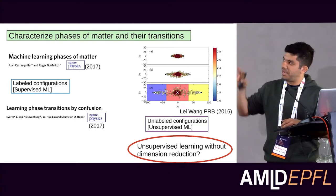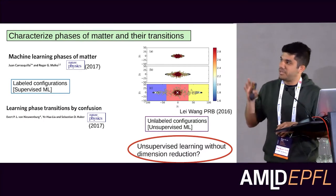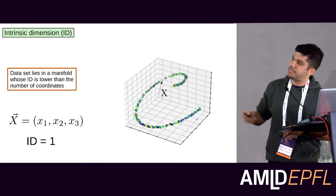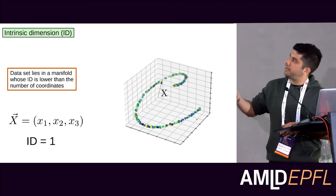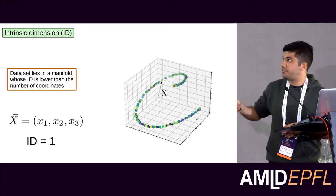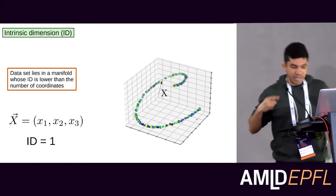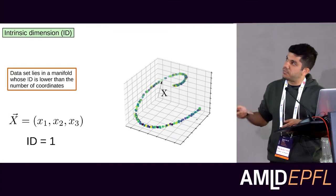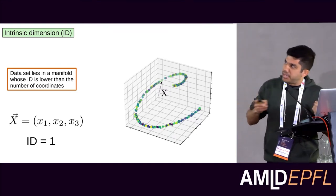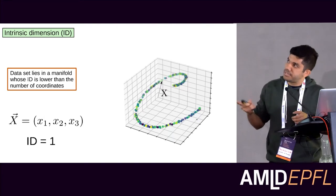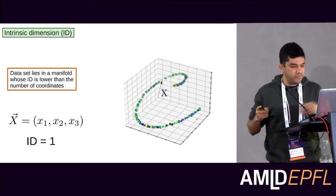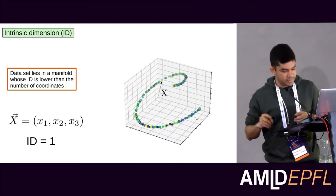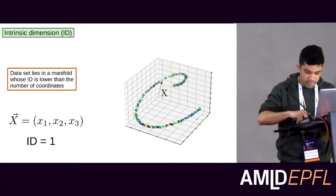Let me explain intrinsic dimension intuitively. Real data sets have structure. Here I show a synthetic data set I created myself. Despite being described by three coordinates and embedded in three dimensions, we can lay this data set down on a manifold of dimension one — an effective dimension of one. We call this the intrinsic dimension. Intuitively, it measures the number of degrees of freedom you need to describe the data set.